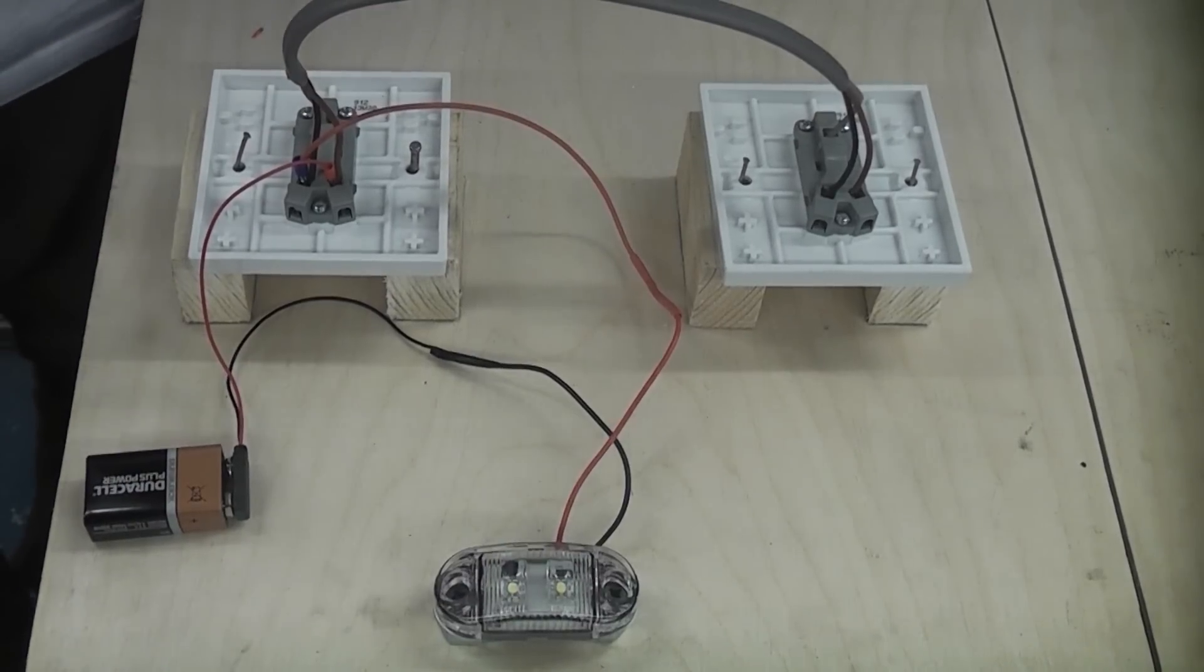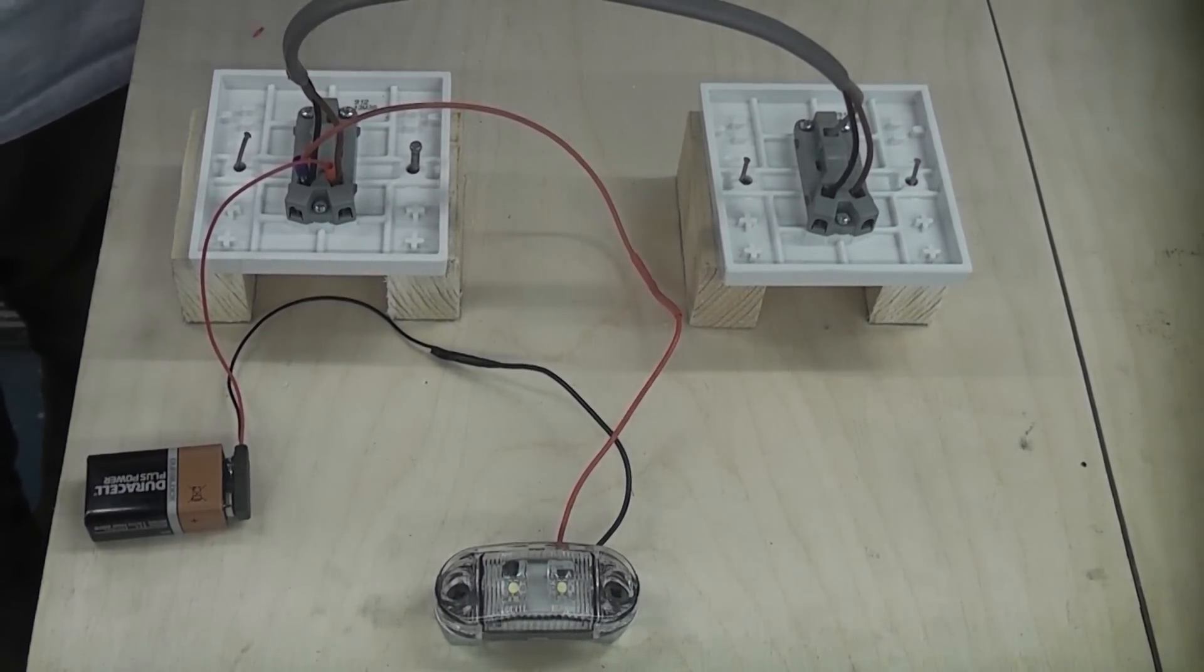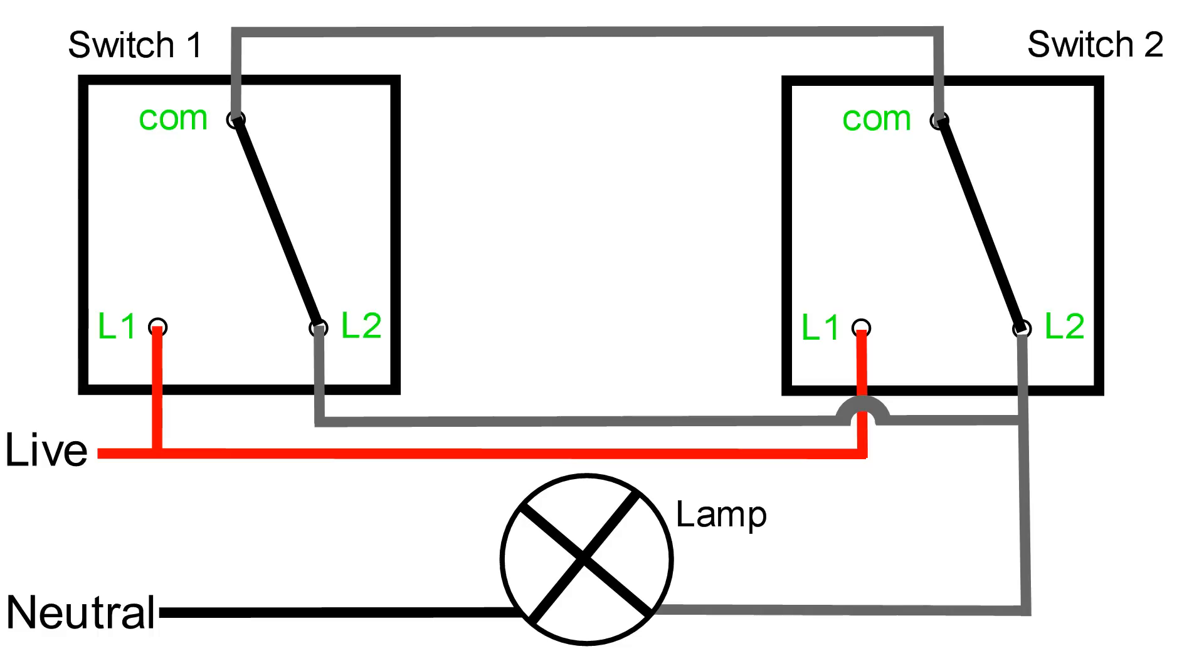So it is very simple to do and it's a lot easier to understand if you actually look at the schematic diagram. If we flick switch one the light illuminates, flick switch one again and the lamp goes off. Flick switch two the lamp illuminates, flick switch one the lamp goes off.